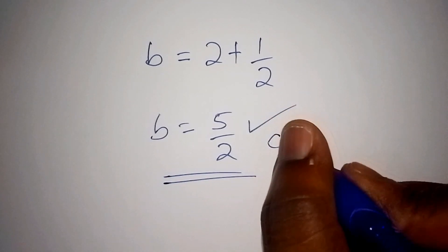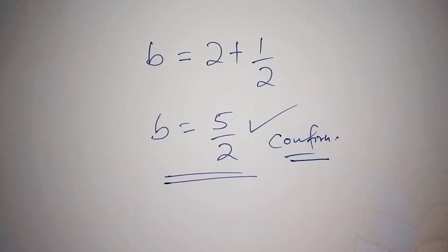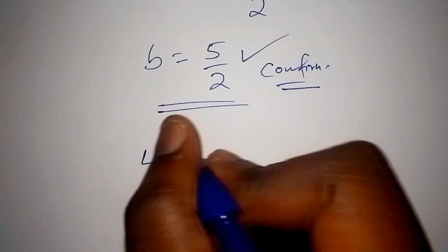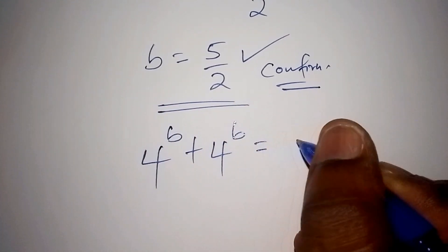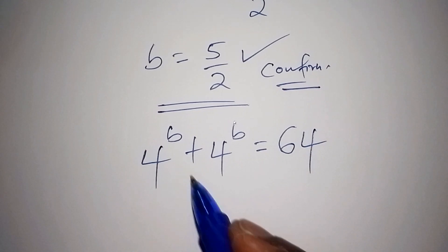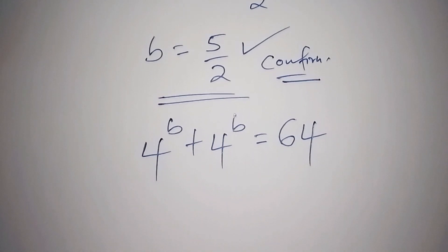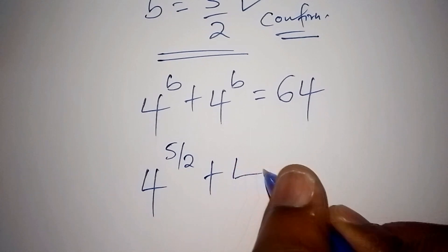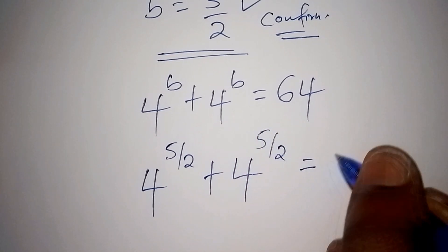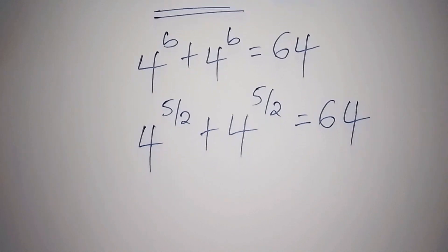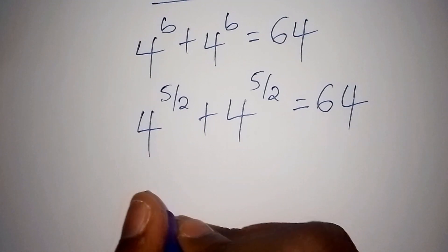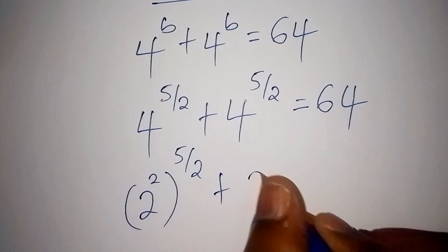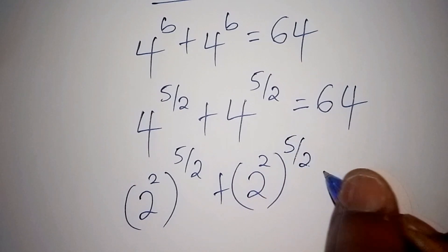Let us now verify this answer. We go back to 4 to the power of b plus 4 to the power of b equals 64, and substitute b with 5 over 2. So we have 4 to the power of 5 over 2, plus 4 to the power of 5 over 2, equals 64. We rewrite 4 as 2 to the power of 2, so we get 2 to the power of 2 times 5 over 2, plus 2 to the power of 2 times 5 over 2, equals 64.